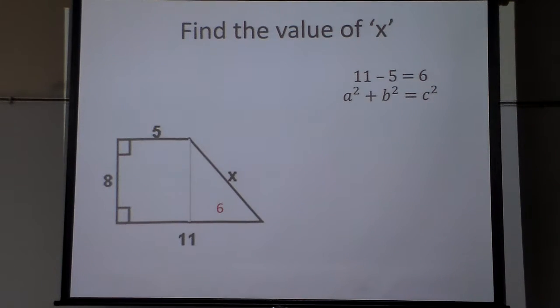So now I can go to my formula here, a squared plus b squared equals c squared. The 8 squared plus the 6 squared will equal the hypotenuse squared.